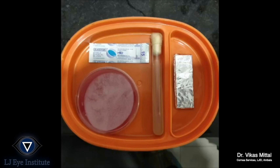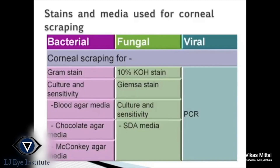The tray includes a 15 number blade, 2 slides, blood agar, and Sabouraud's dextrose agar. This is the list of the various stains and media used for corneal scraping.